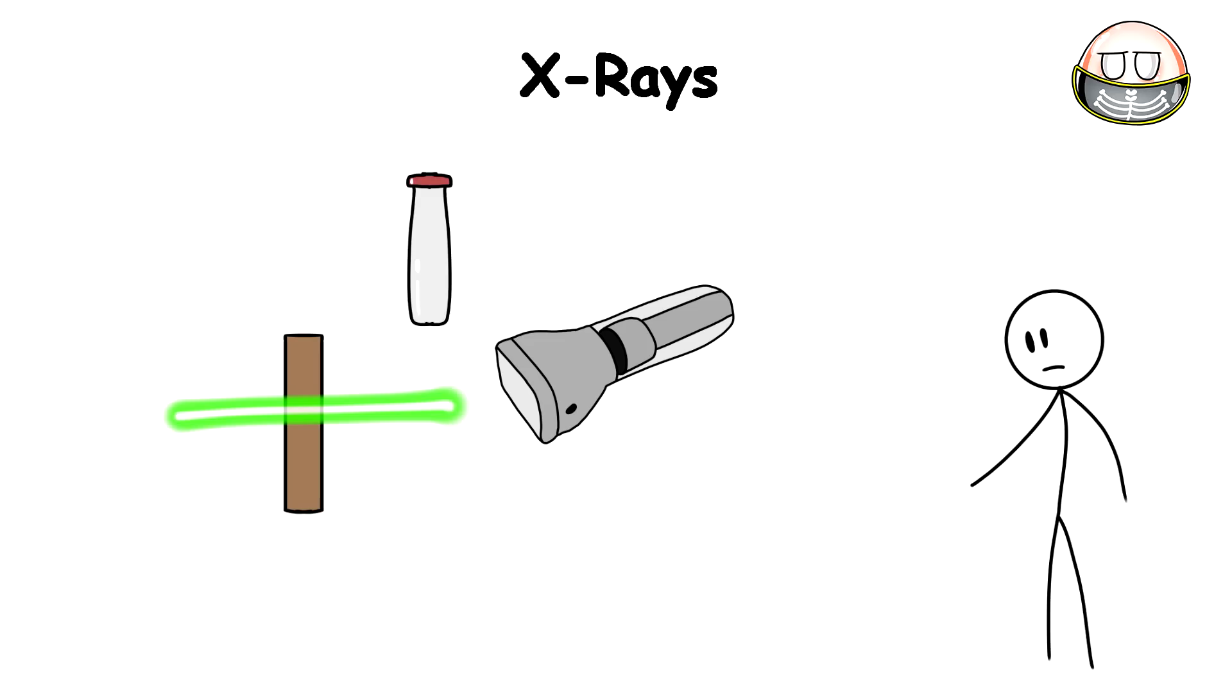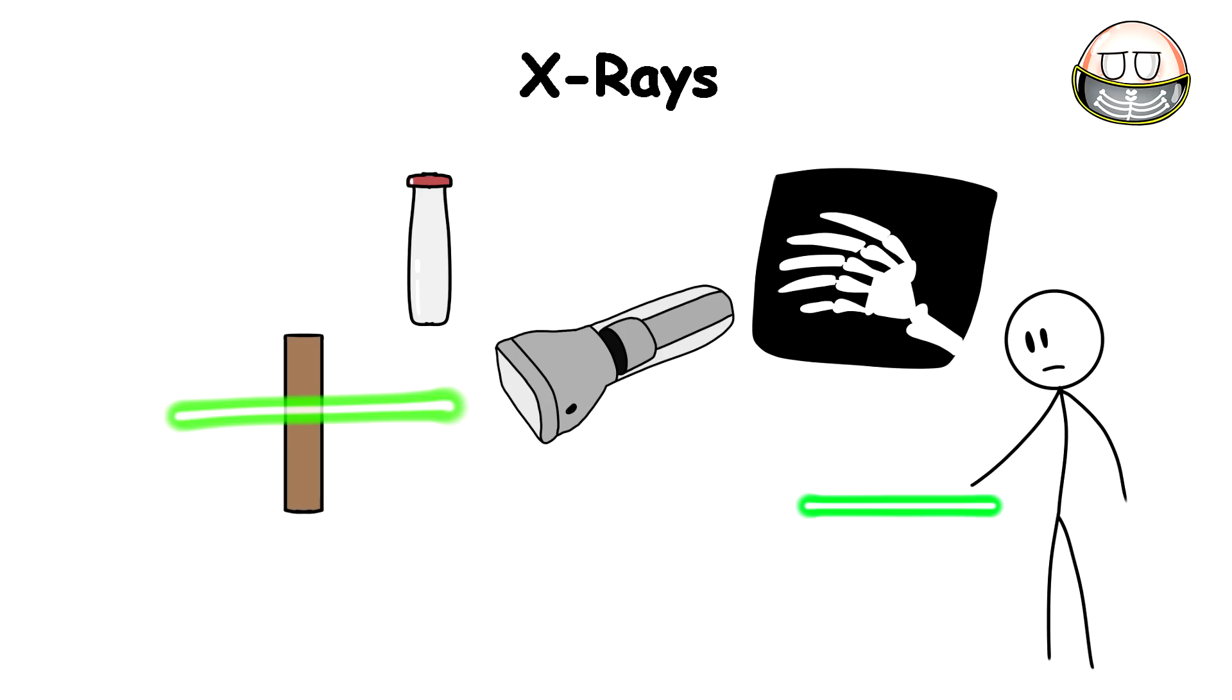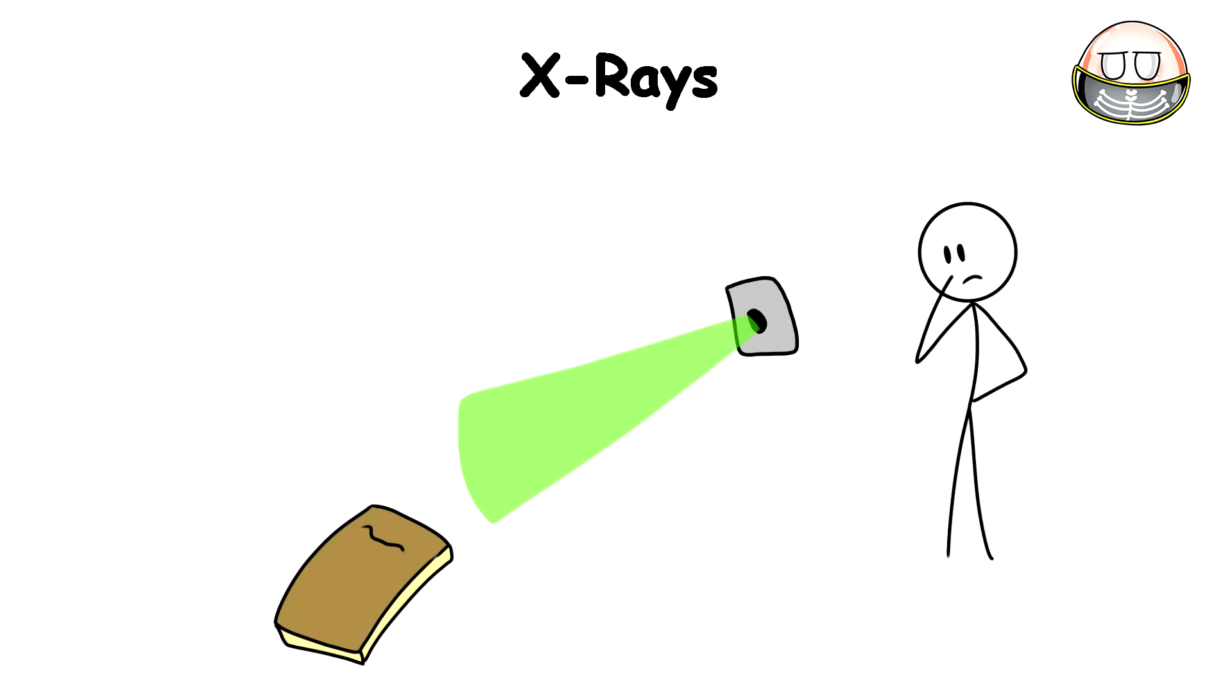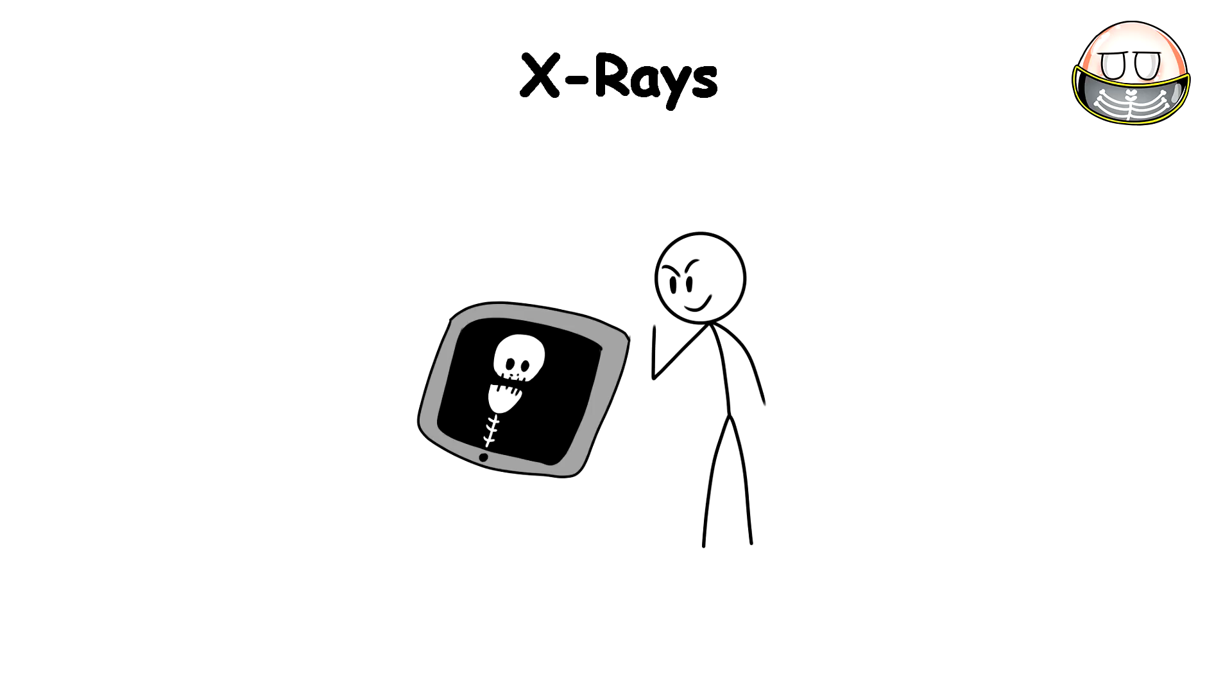When he placed his hand in the path of these mysterious X-rays, he was stunned to see an eerie shadowgram of his bones projected onto the plate. Röntgen's mind raced with possibilities. He quickly aimed the X-ray beam at objects like a book, a deck of cards, and even his wife's hand and ring. The ray's unique ability to penetrate and create images of the body's interior composition was amazing.